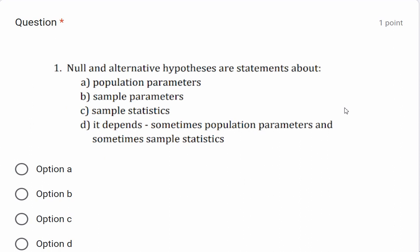The null and alternative hypothesis statements involve population and sample parameters. Depending on the context, statements can be based on population parameters or sample statistics.